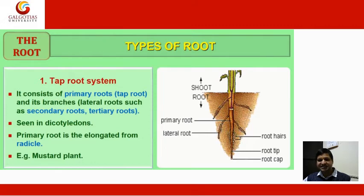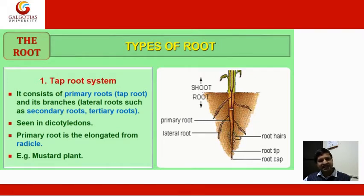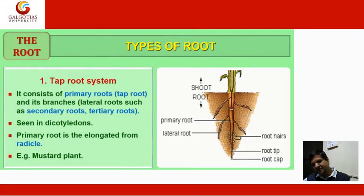Tap root consists of a primary root — the tap root — and its branches, the lateral roots, such as secondary roots and tertiary roots. It is seen in dicotyledons, where the primary root is elongated from the radicle. The example is the mustard plant. In the image, you can see the primary root, the base root, the lateral roots, the root tip, and the root cap.